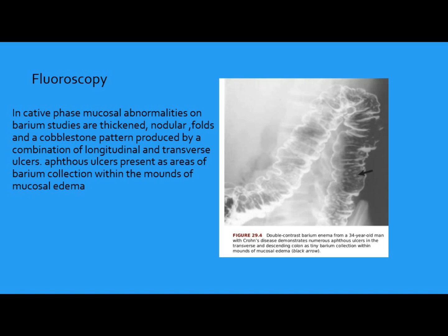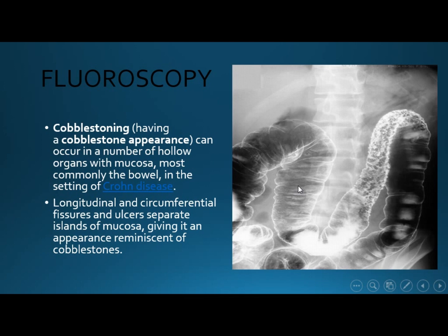After ultrasound, we can use fluoroscopy. The barium study is a general x-ray. In the acute phase, we have shallow ulcers which appear like nodules. This is a double-contrast barium study of the transverse and descending colon. The cobblestone appearance is caused by longitudinal and circumferential fissures crossing each other, and this pattern of ulceration appears as a cobblestone appearance.